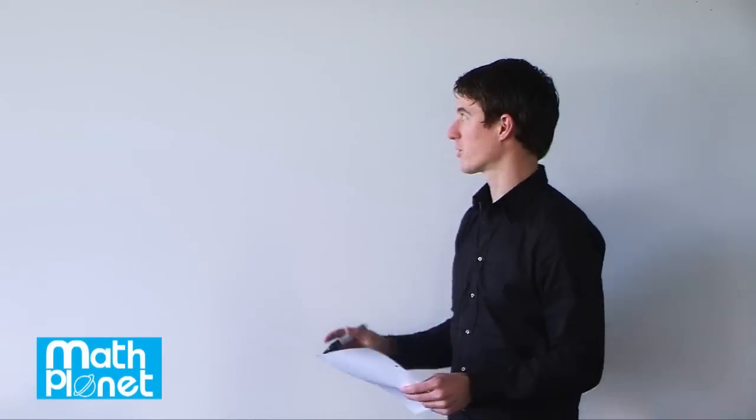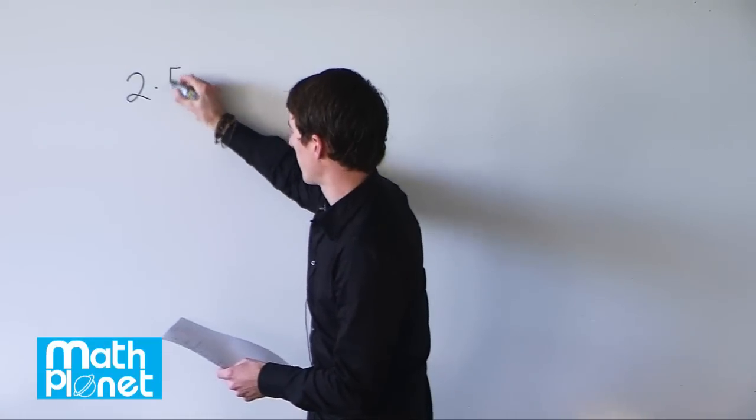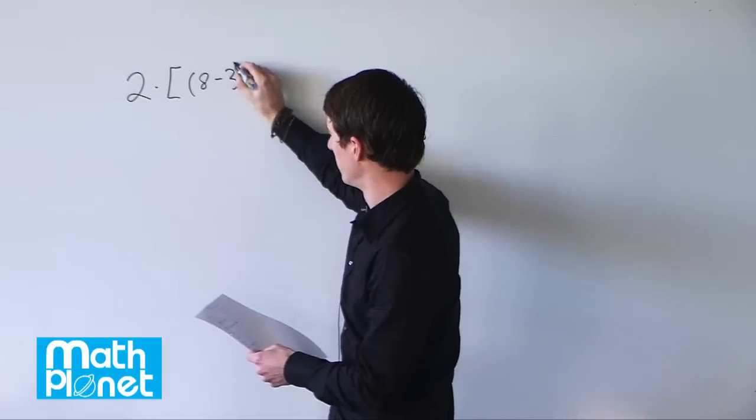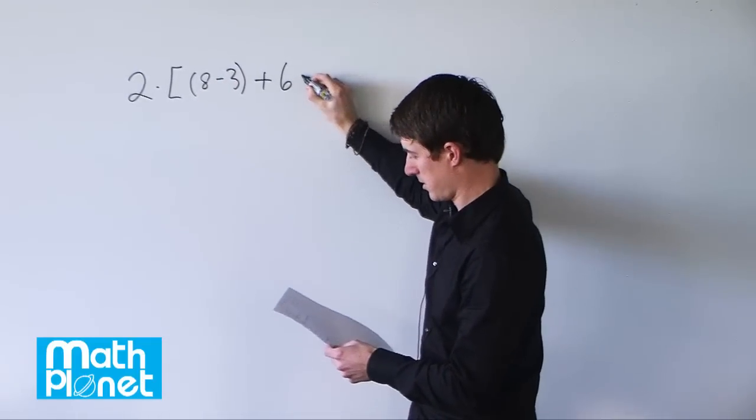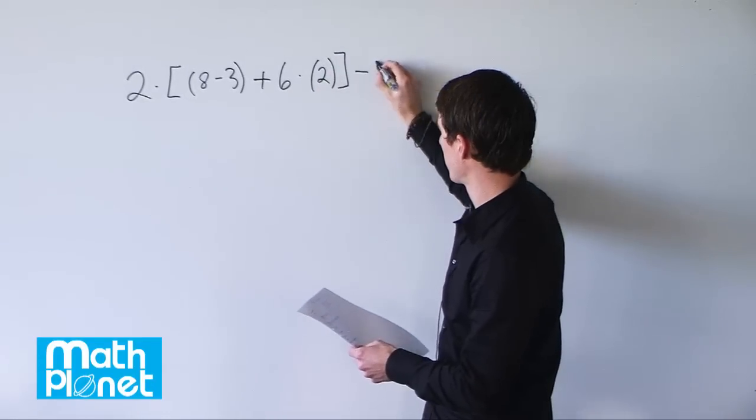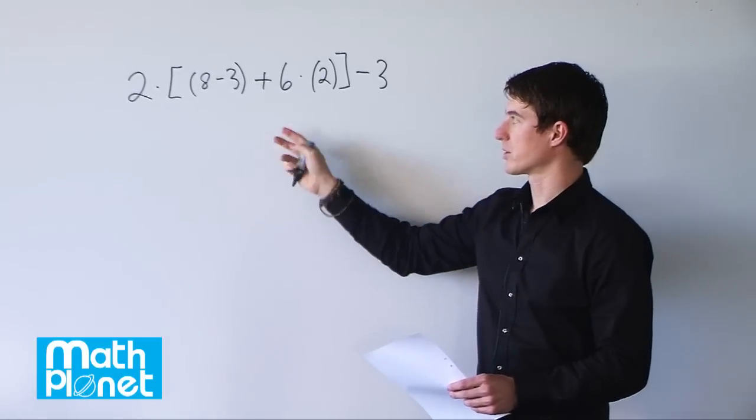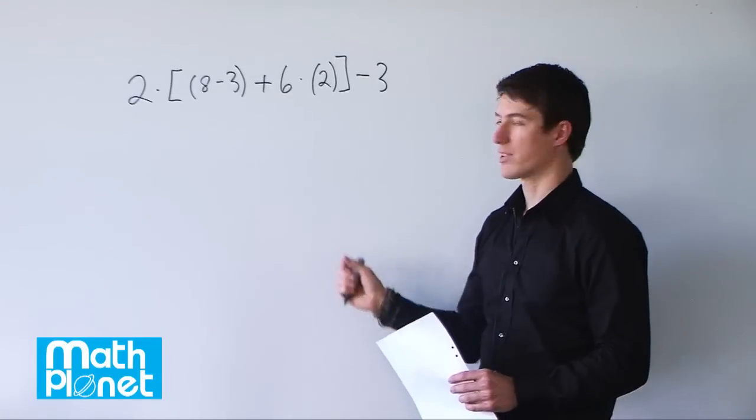Here we have an arithmetic expression and we want to simplify it to solve as best as we can. The expression is 2 times bracket quantity 8 minus 3 plus 6 times bracket 2 close bracket minus 3. So it's just a bit of a messy arithmetic expression. We're going to simplify it down as much as possible using the order of operations and see what it equals.